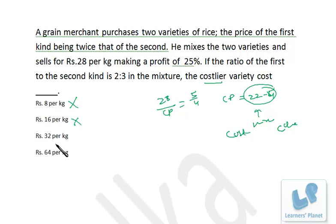32, it is possible. Let's see - if it is 32, then the cheaper variety must be 16. So 22.4 lies between 16 and 32. It's not necessary to be exactly in between because the ratio is different, but it is lying between 16 and 32, so that's the correct choice.